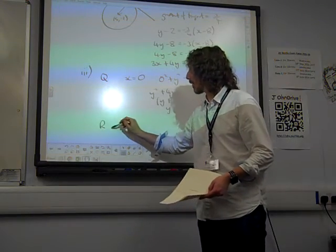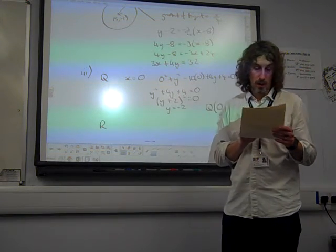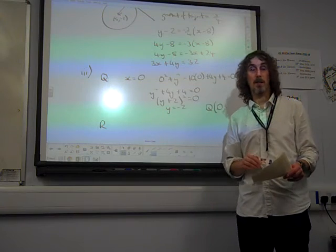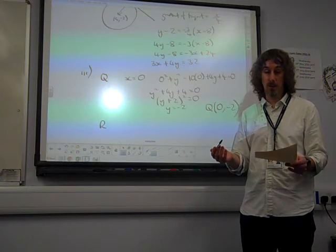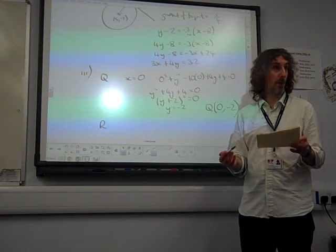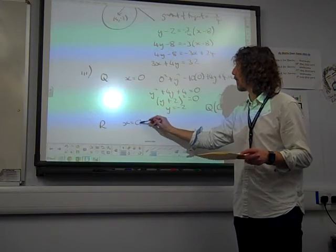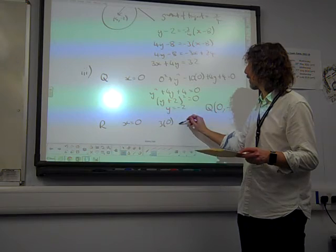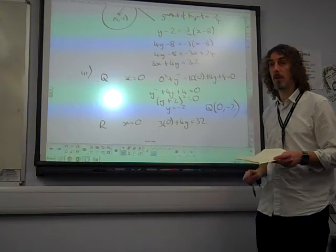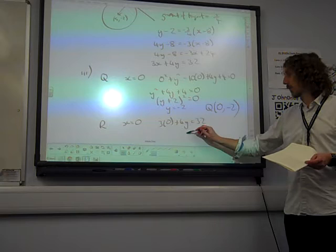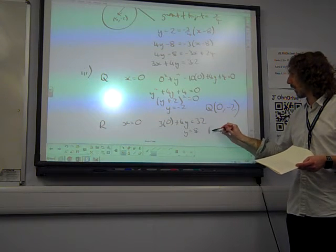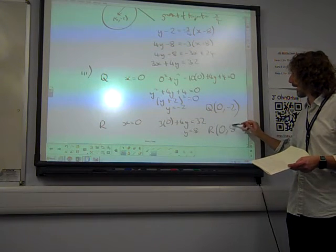R. R is the point where the tangent meets the y-axis. And they gave us the tangent equation. So even if we didn't do part two we've already got the tangent equation. So that's where x equals 0. So three zeros plus 4y equals 32. Which gives us y equals 8. So R is the point (0,8).